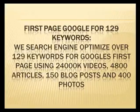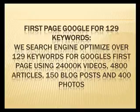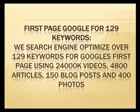We also include the first page of Google for 129 keywords. We search engine optimize over 129 keywords for Google's first page using 24,000 videos, 4,800 articles, 150 blog posts, and 400 photos.